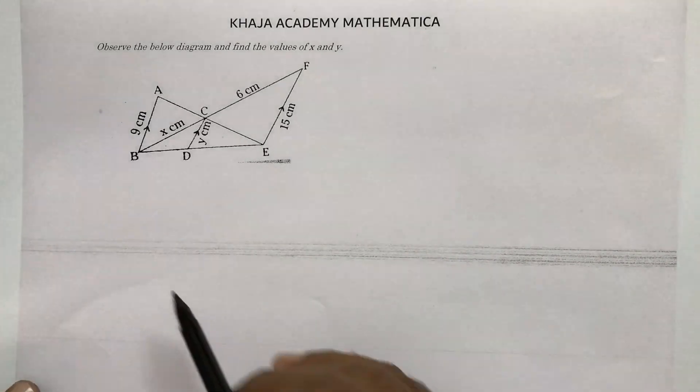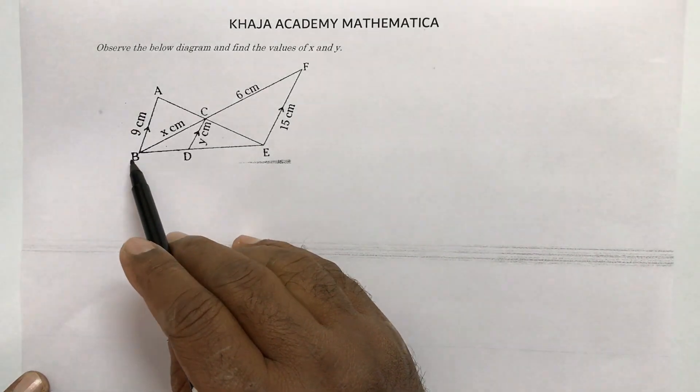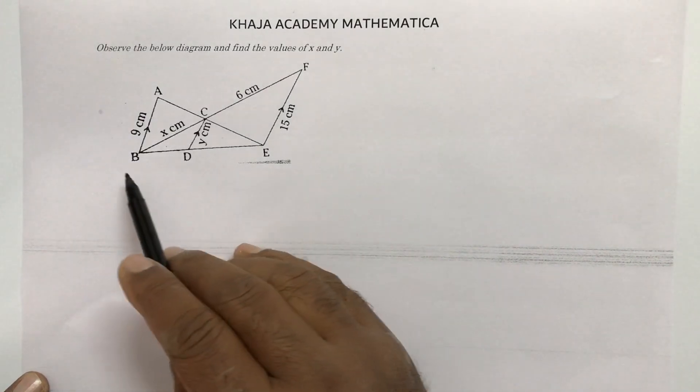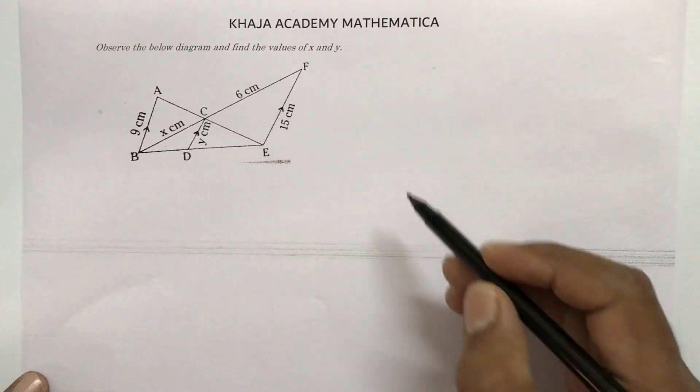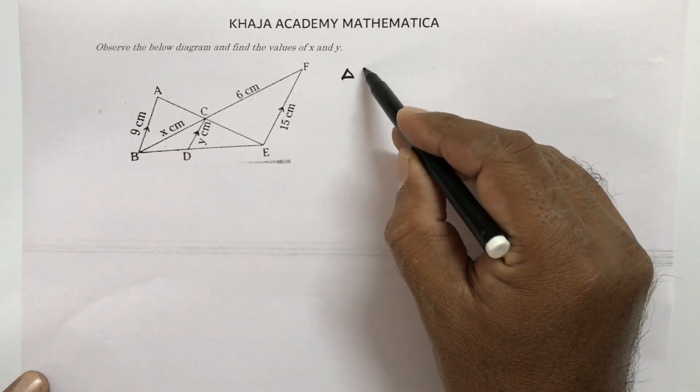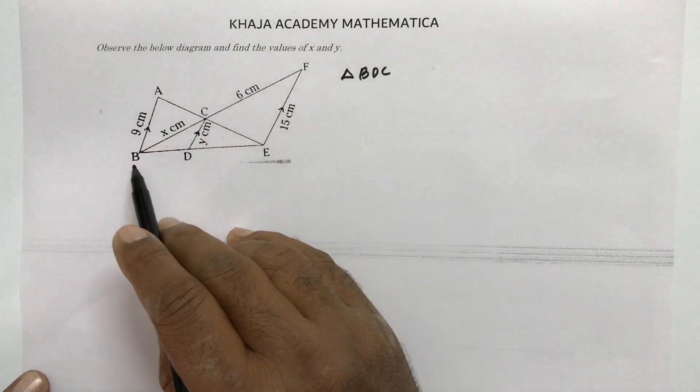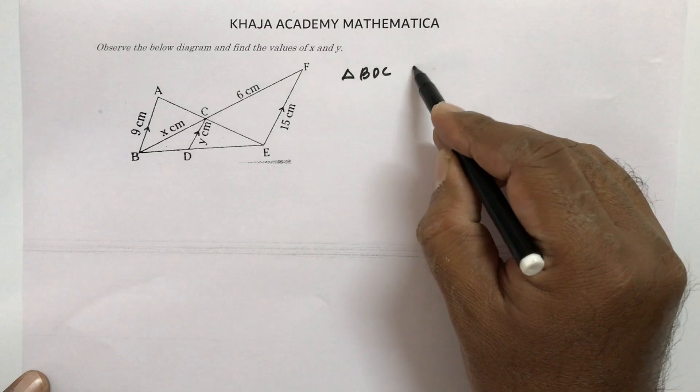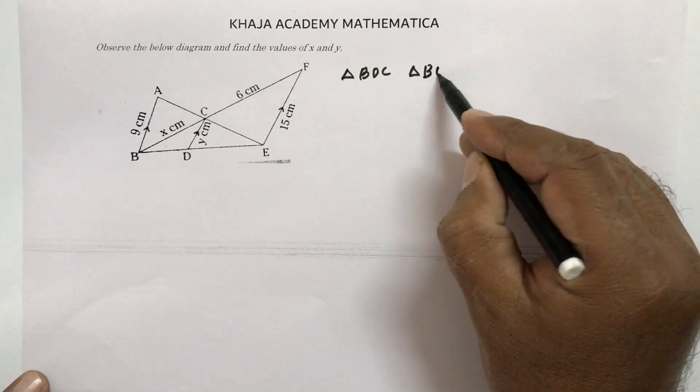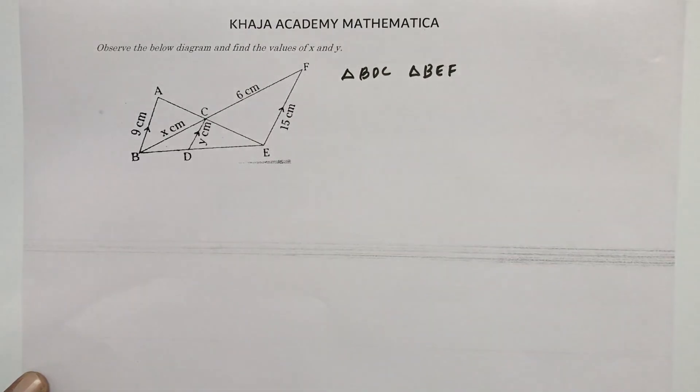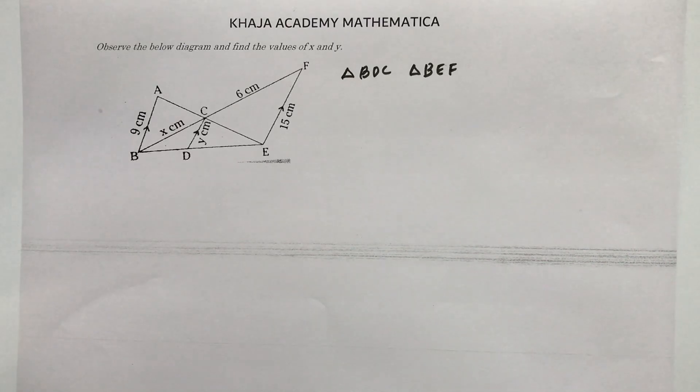So here I will start the triangles from here like B, D, C, B, E, F. First, I will try to prove these two triangles similar: triangle BDC and triangle BEF. These two triangles I will try to prove similar.